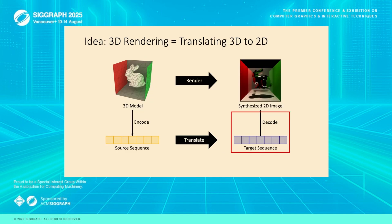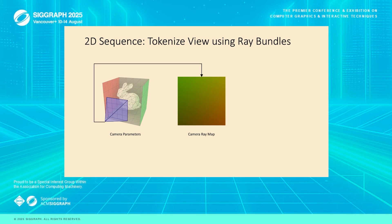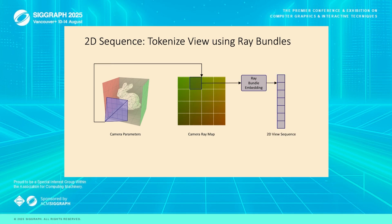On the other side of the formulation — tokenizing the 2D image — we use the camera rays. Every pixel in the final image corresponds to a single camera ray. However, for performance reasons, we don't encode one ray at a time. Instead, we bundle an 8×8 grid of rays into a single token. This means each output token we generate is represented by an 8×8 patch of pixels in the final image.